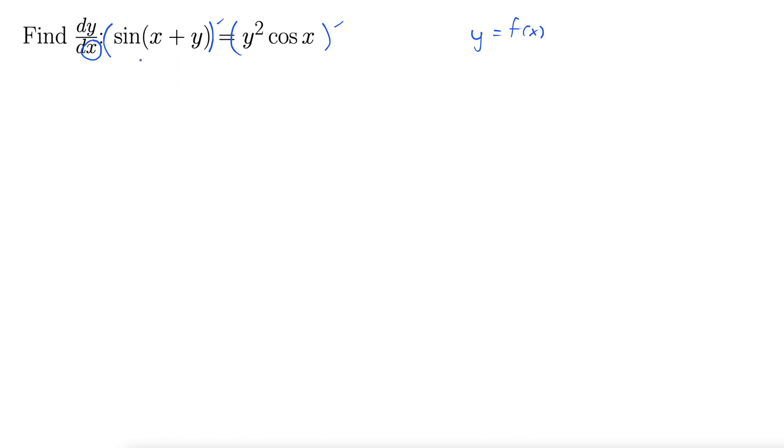On the left side we're gonna need the chain rule which tells us to take the derivative of the outside and multiply it by the derivative of the inside. So here our outside function is sine so the derivative of sine is cosine and then you leave the inside alone. That's the thing with the chain rule. You only do it one step at a time so you leave the inside alone.